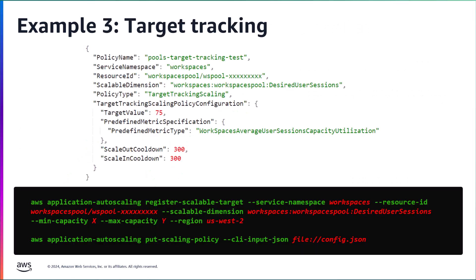The final example outlines the process and CLI commands to set up a target tracking policy. The first step is to create a JSON configuration file that defines the parameters of the target tracking policy. Ensure that the service namespace is workspaces, that the resource ID is workspaces pools forward slash wspool dash then the ID of your pool. You can get that ID from the workspaces pool console.